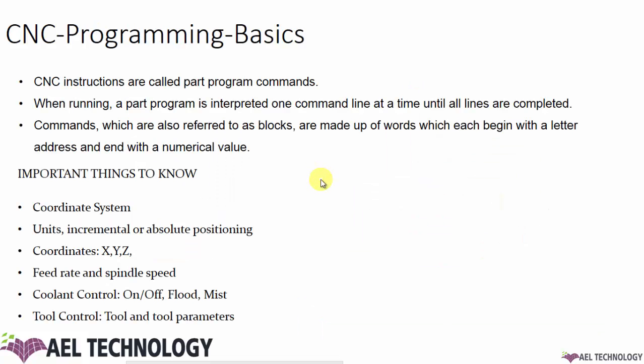So how are we communicating with the CNC machine? We communicate with the help of part programs. These part programs are CNC instructions. When running a part program, it is interpreted one command line at a time until all lines are completed. Latest machines can read many lines ahead before sending signals, and can forecast what the next movements will be and send the entire signal to the motors.